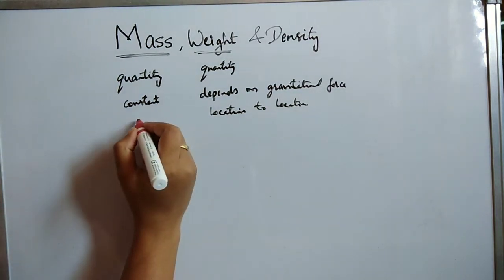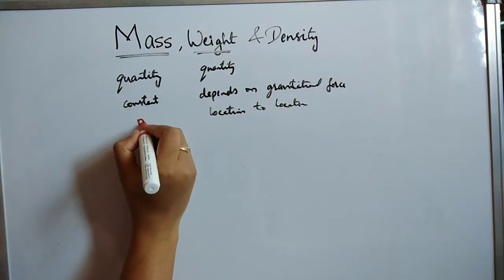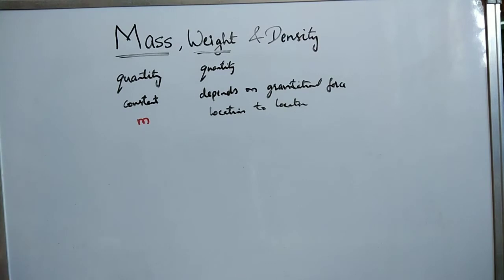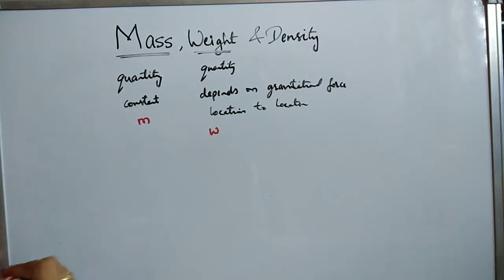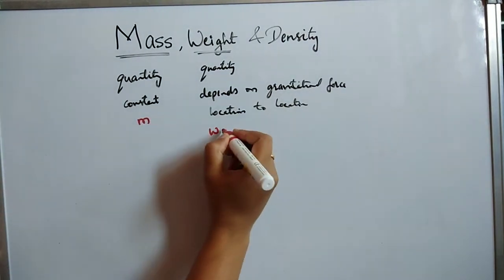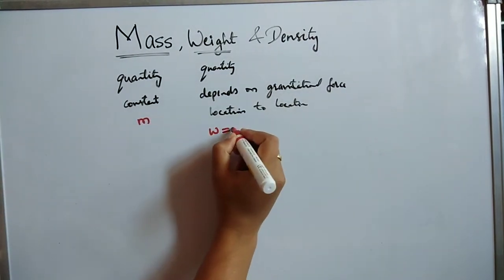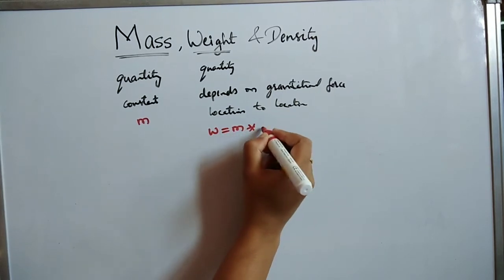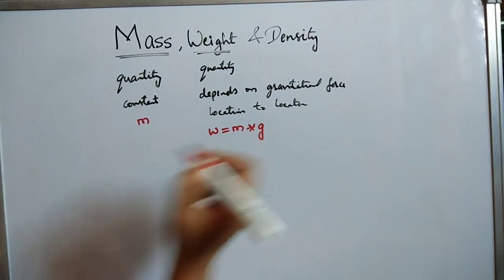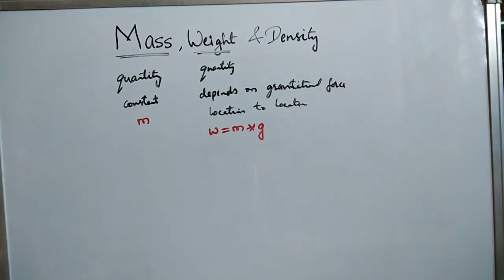So if we represent mass by M and weight by W, weight is equal to mass into gravitational force: W = M × g.